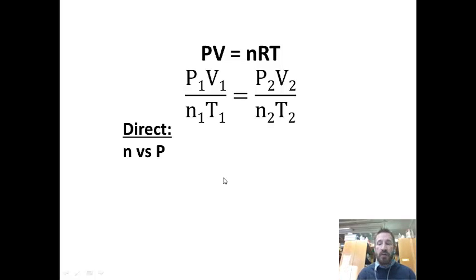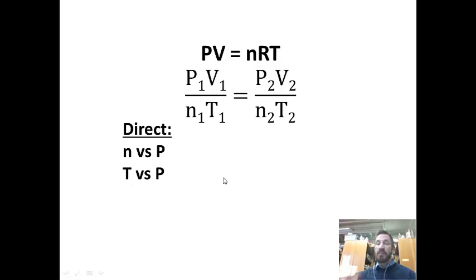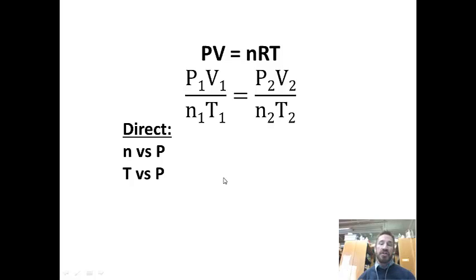The next direct relationship is T versus P. Let's say you have an aerosol can. You heat it up — it's a rigid container with the same number of particles, but those particles keep moving faster and faster. As you increase temperature, they hit with more and more energy, so that pressure goes up and up. That's why you don't put an aerosol can into a flame — it could explode.